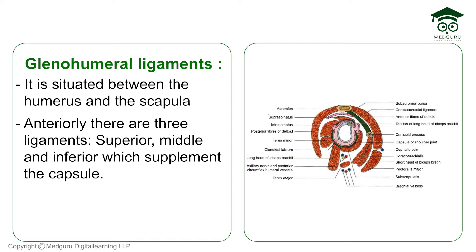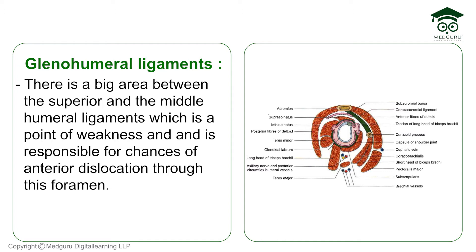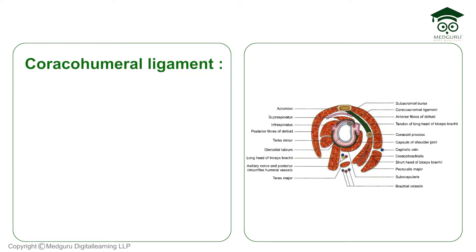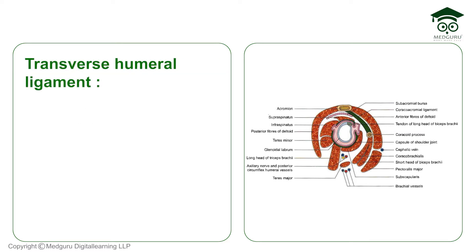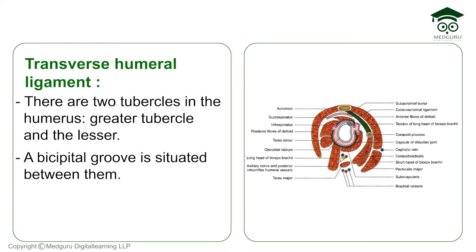Now the glenohumeral ligaments — between the scapula and the humerus — there are three: superior, middle, and inferior glenohumeral ligaments, located anteriorly. The capsule is supplemented under the superior and middle glenohumeral ligaments and this is a point of weakness, meaning anterior dislocation of the shoulder can occur through this foramen. The coracohumeral ligament extends from the root of the coracoid process to the neck of the humerus.